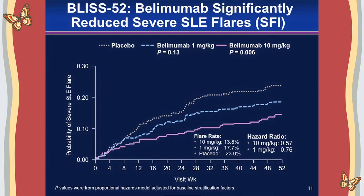Belimumab also showed activity in reducing flares as measured by SELENA SLEDAI. By the end of one year, approximately 23% of placebo patients had experienced a severe flare, compared to only 13.8% in the high-dose Belimumab group — a statistically significant difference representing a 43% reduction in the risk of severe flare over one year in patients on high-dose Belimumab plus standard of care compared to placebo plus standard of care.